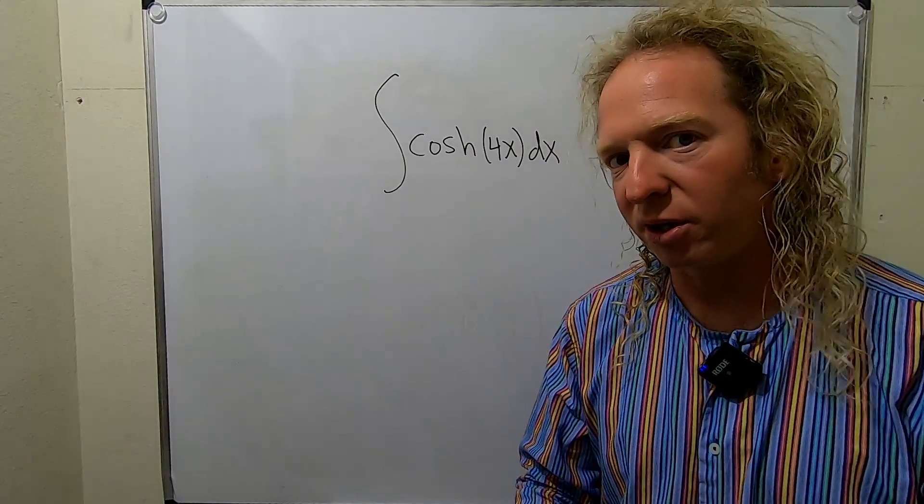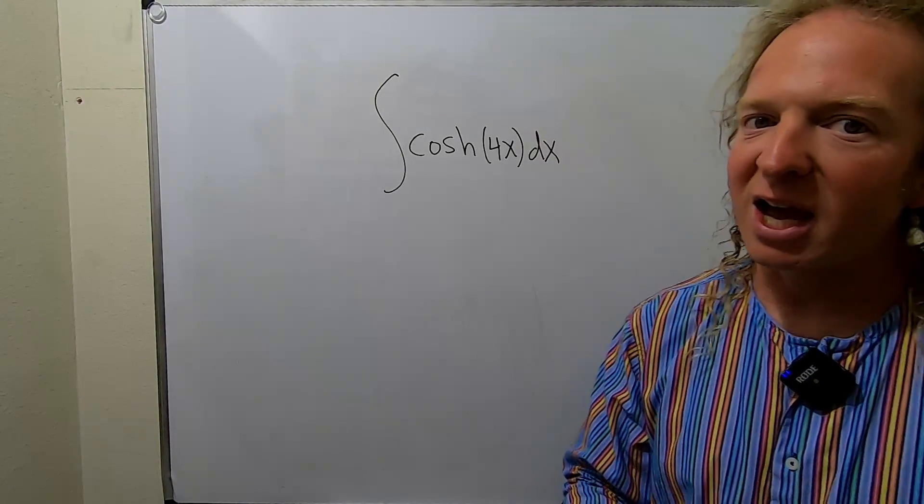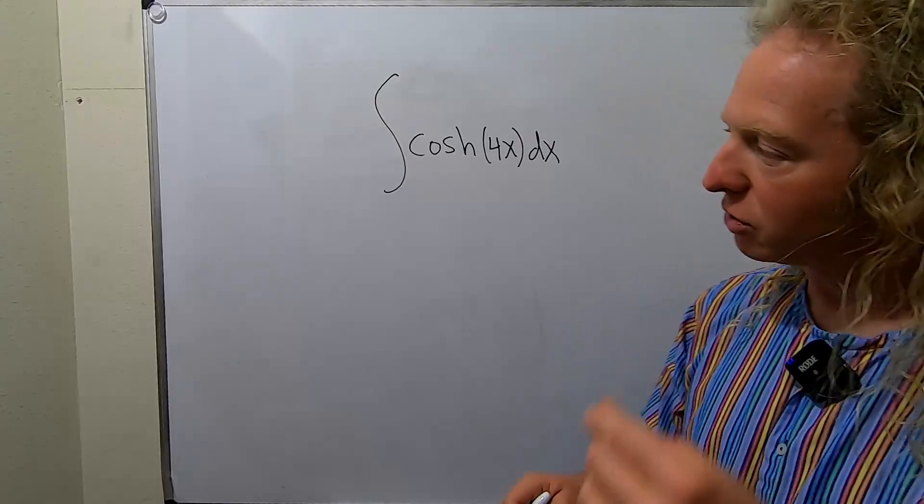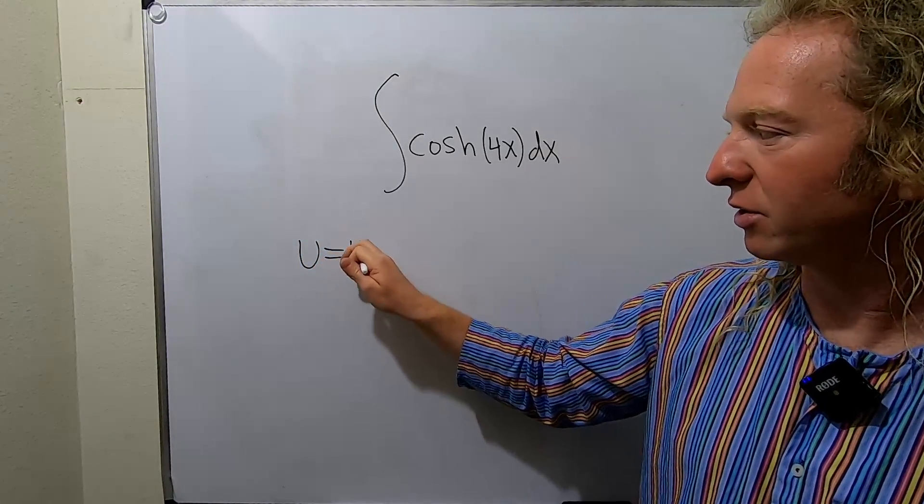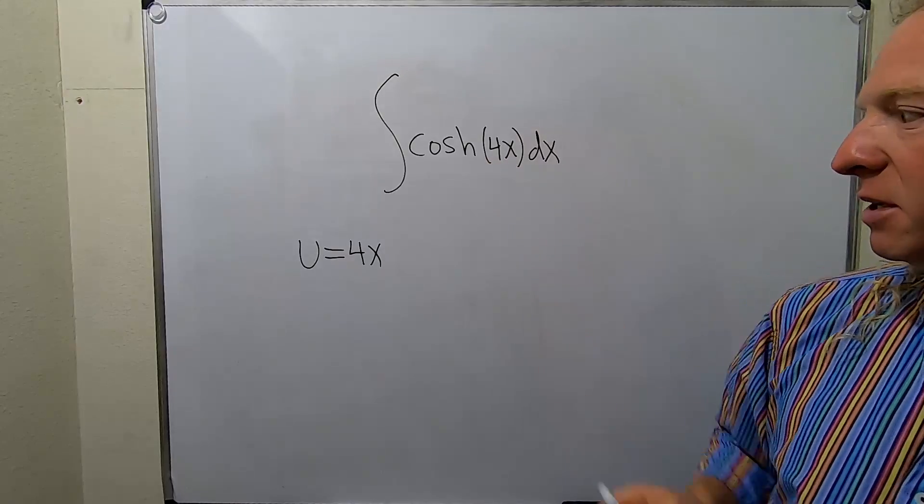So if you want to show all the work, which we'll do, we technically have to make a u substitution. So let's go ahead and do it. We'll let u be equal to 4x. That's the inside piece.